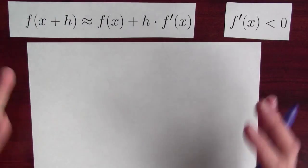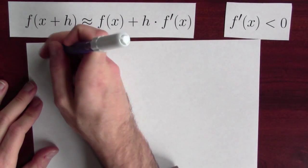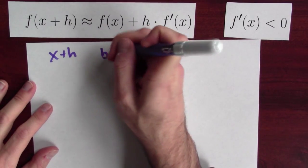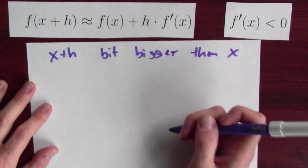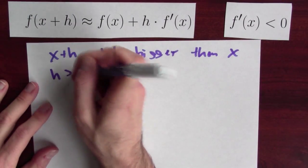We can play the same kind of game when the derivative's negative. Here we go. So again, x plus h is just a bit bigger than x. And in that case, h is positive.